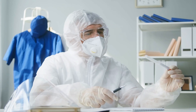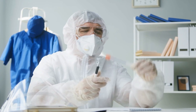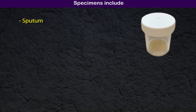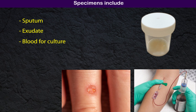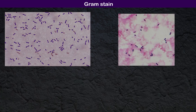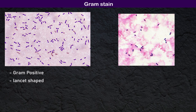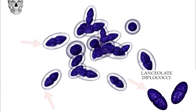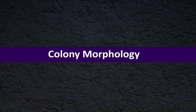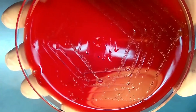Laboratory features and diagnosis: Specimens are collected according to the site of infection and include sputum, exudate, blood for culture, and cerebrospinal fluid. S. pneumoniae are gram-positive cocci, usually lancet-shaped, arranged in pairs (diplococci) or short chains. Lancet-shaped means the diplococci seen under the microscope are oval with somewhat pointed ends rather than being circular or round.